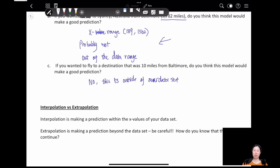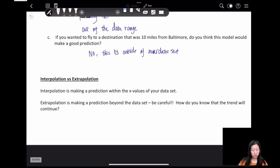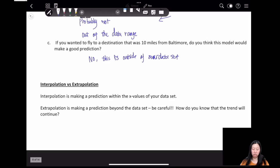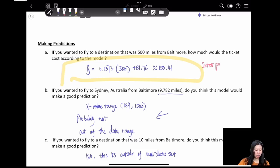Now they have another way to explain this phenomenon: interpolation versus extrapolation. Interpolation is making a prediction within the x values of your data set, which is the first one we used. If we predicted some flight that is 500 miles away from Baltimore, yes, we can use this model to predict it because this is interpolation.